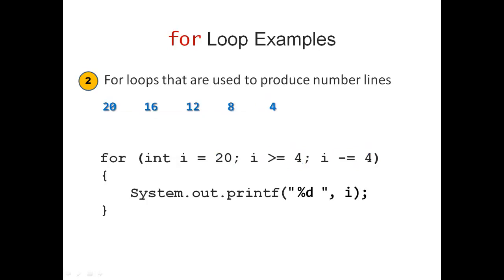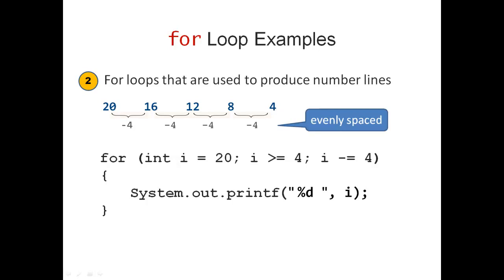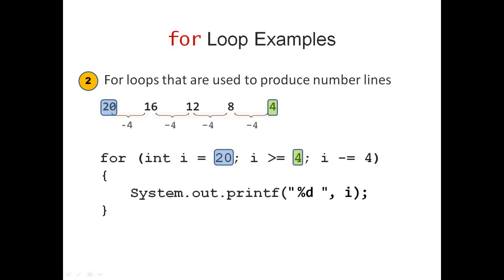Now let's look at a second example: 20, 16, 12, 8, 4. You always reach the next number by subtracting 4 from the previous number. Once again, all my numbers in the number line are evenly spaced. My pattern looks very similar. I start by initializing my control variable with the first element, I continue until I reach the last element, and I update by subtracting 4, which is the difference between two adjacent elements in my number line.